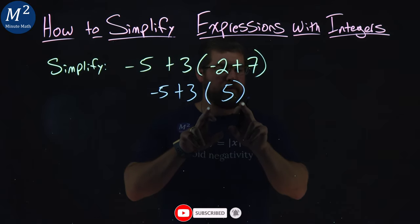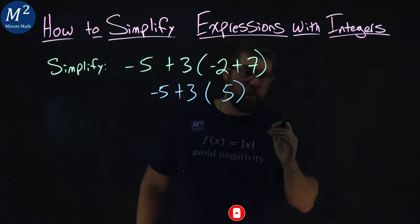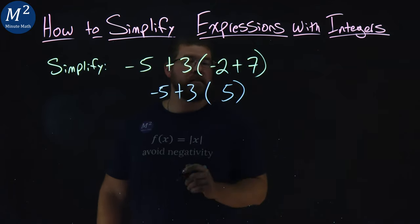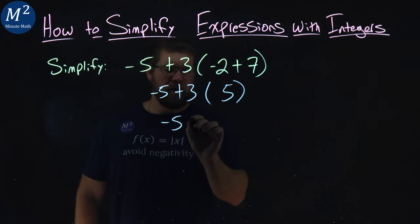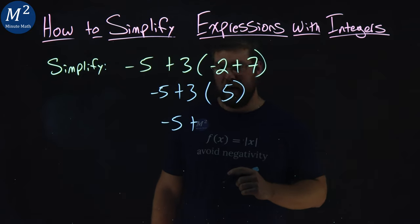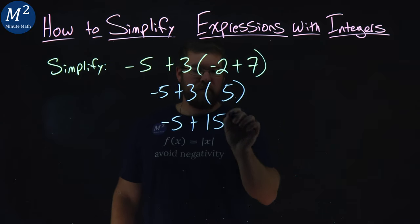Now there's nothing left inside the parentheses, so as we go down our order of operations, the next one I see is multiplication: 3 times 5. So this negative 5 comes down here, plus 3 times 5 comes out to be 15.